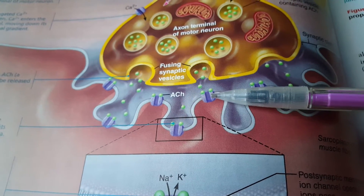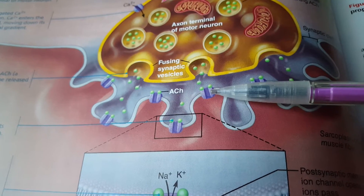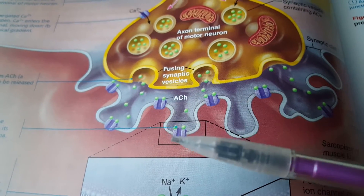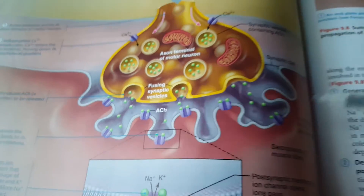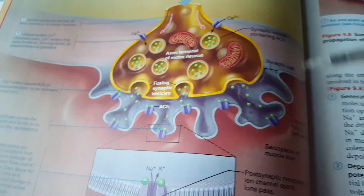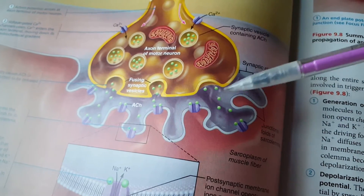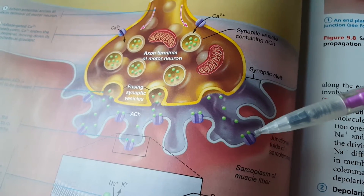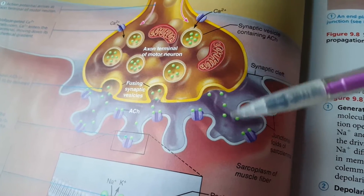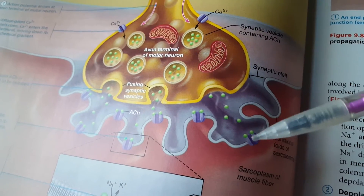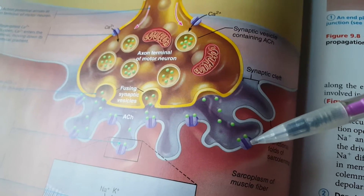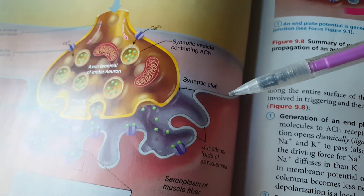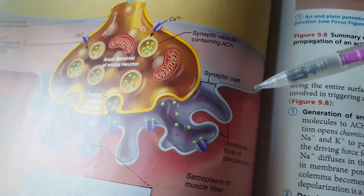Acetylcholine can then diffuse across the synapse and bind to ligand-gated receptors on the sarcolemma. Remember, the folded part of the sarcolemma is called the motor end plate. With enough stimulus, when these ligand-gated channels open, that causes sodium to come in, and that depolarizes the membrane of the sarcolemma.